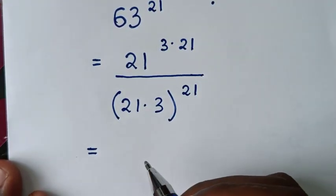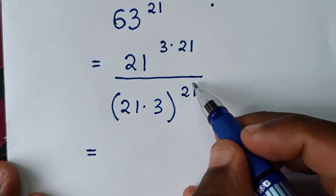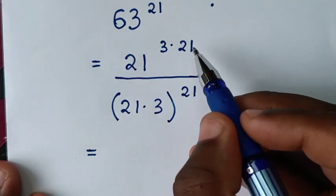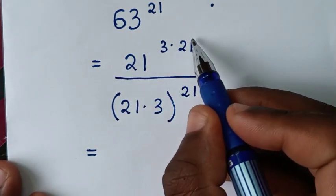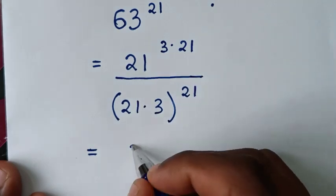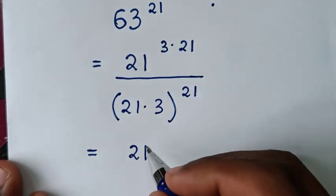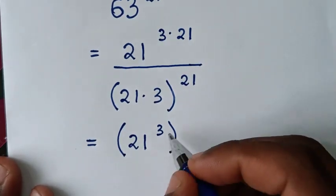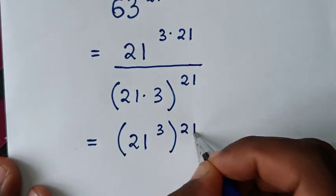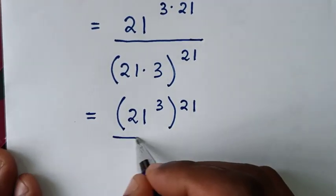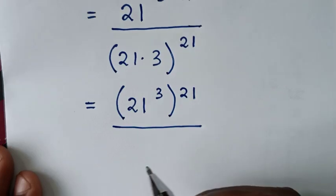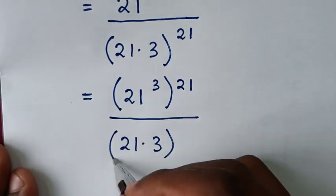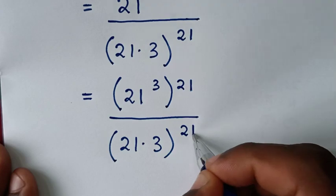In the next step, in the denominator the power of 21 is outside the bracket, and in the numerator we also move the power of 21 outside the bracket. So we have 21 power of 3 inside the bracket, with the power of 21 outside the bracket, over 21 times 3 in a bracket raised to the power of 21 outside the bracket.